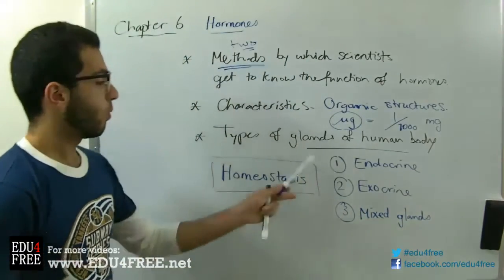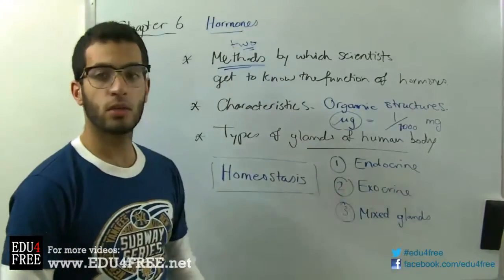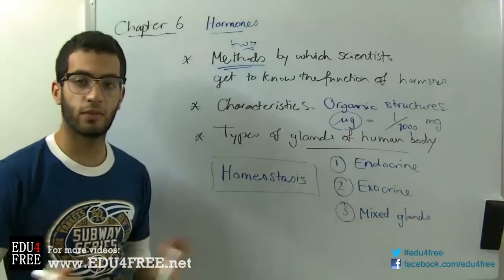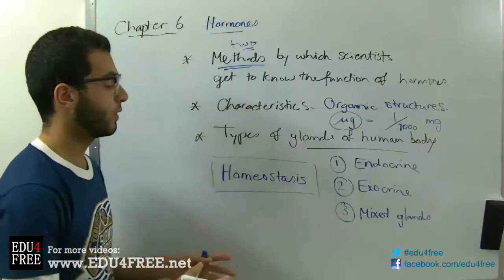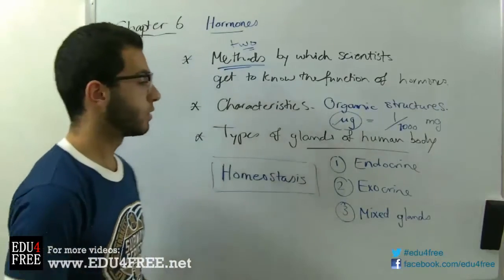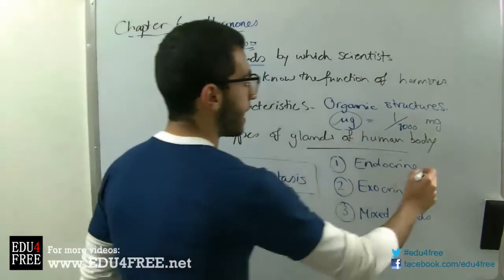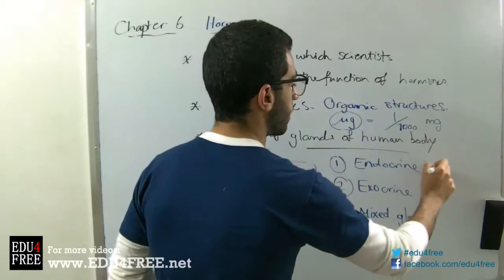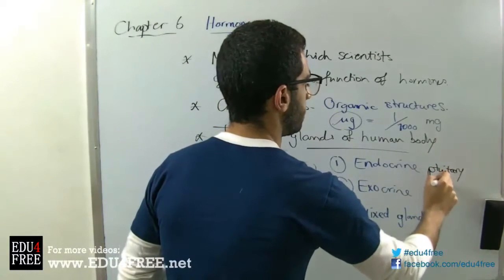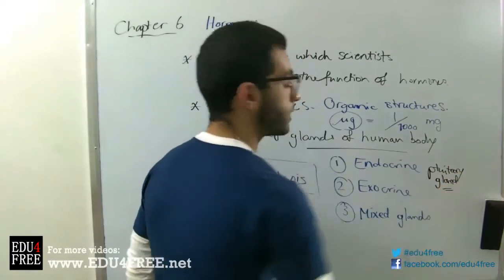So what's the definition of each one of these? We have endocrine glands — endocrine glands are glands that don't have ducts. They pour their secretions directly into the bloodstream. An example for that is the pituitary gland. They are ductless.